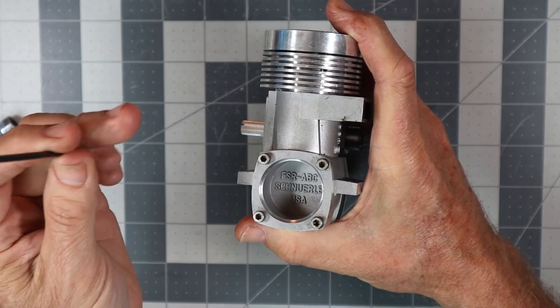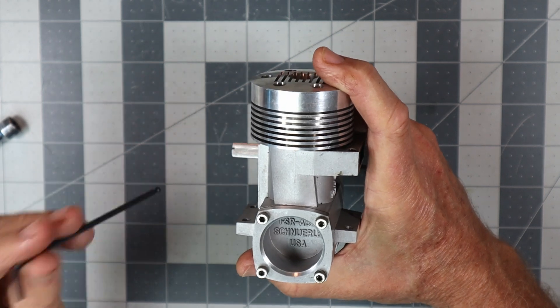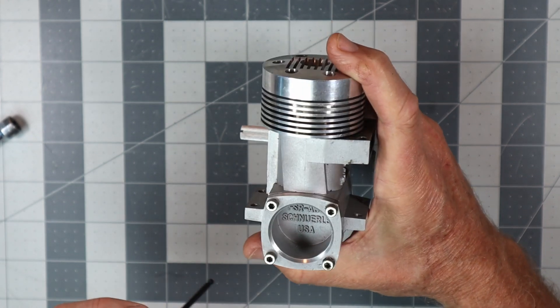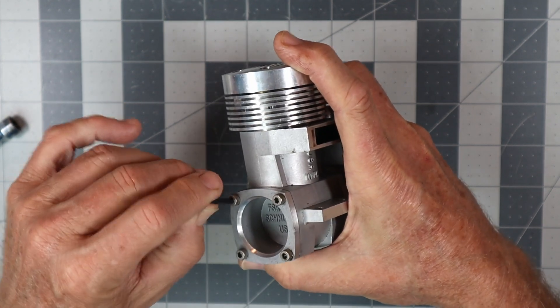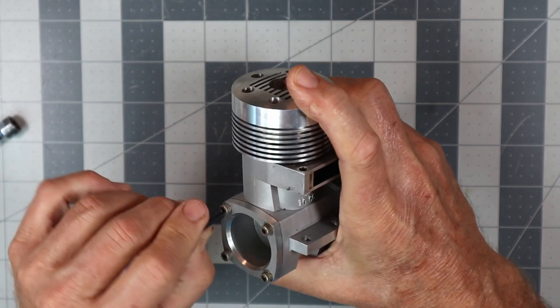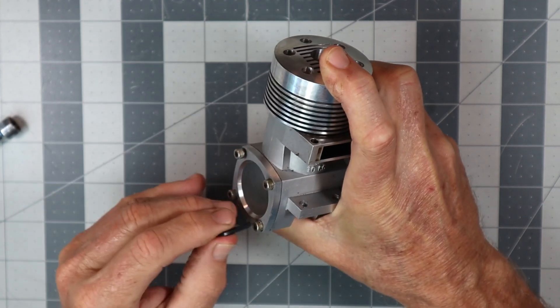But you can see in here I've got a slightly different light now. I've got the two side lights and then I've got another light that's trying to shine as directly down as possible. It says FSR ABC Schneerley USA. So that one felt reasonably tight.